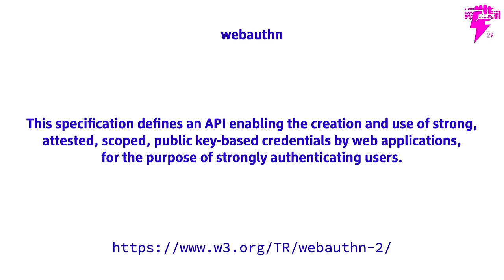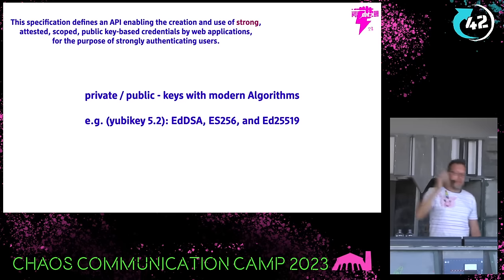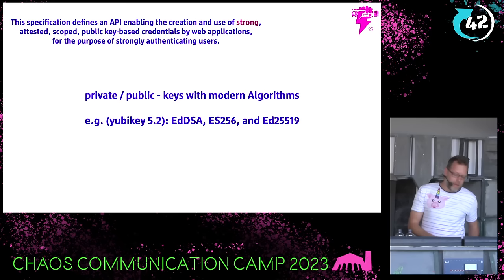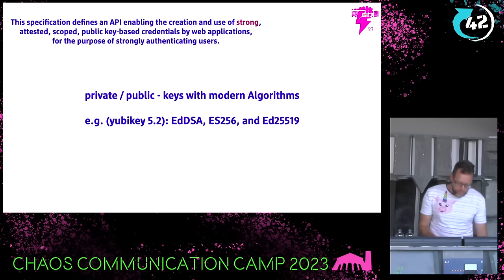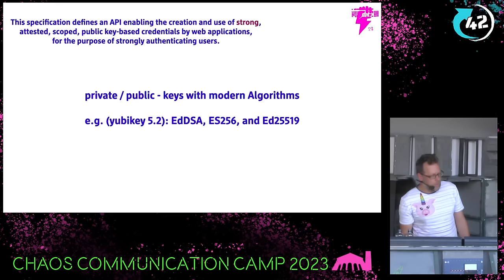WebAuthN is a specification that defines an API enabling the creation and use of strong, attested, scope public key-based credentials. The current YubiKey does EC DSA and ED25519 - elliptic curves, modern cryptography. If you have an old YubiKey, you should not use it. But then again, if you use it, you're still better off than not using any second factor at all.